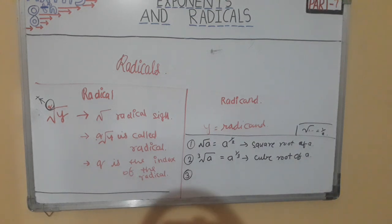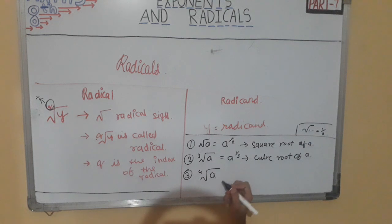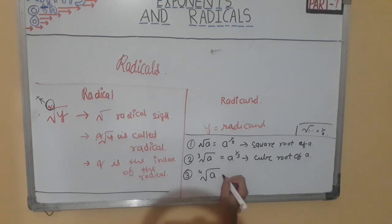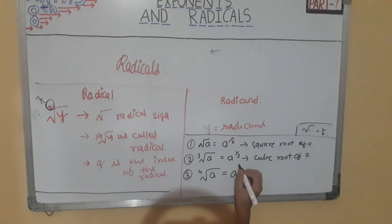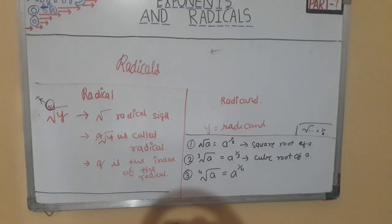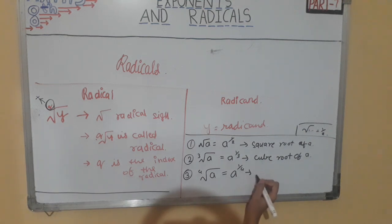Third example: 4-root of a. This will be written as a raised to 1 by 4, and it will be called the fourth root of a.